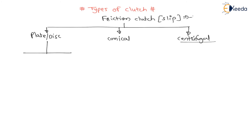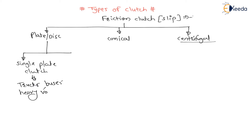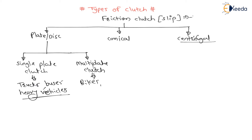Plate clutch is classified into two types. The first type is single plate clutch, and single plate clutches are used in heavy vehicles such as trucks and buses. The second is multi plate clutch, and these multi plate clutches are used in light vehicles such as bikes and machine tools.